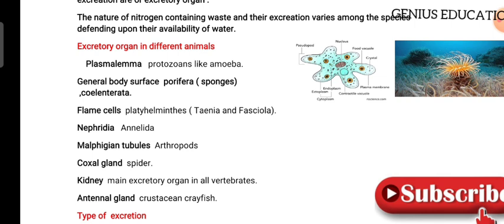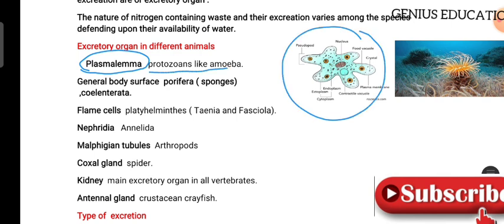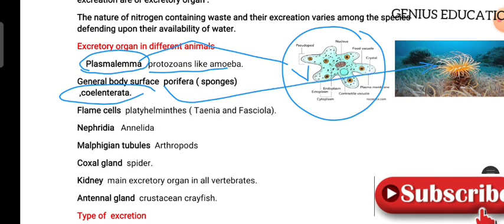Excretory organs in different animals. Sponges and coelenterates excrete body waste through the general body surface. This is called the general body surface excretion method.